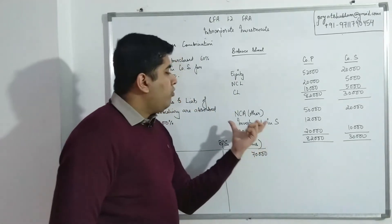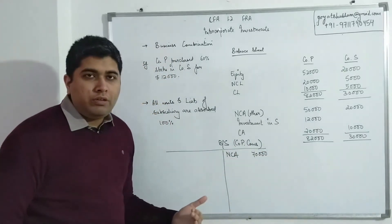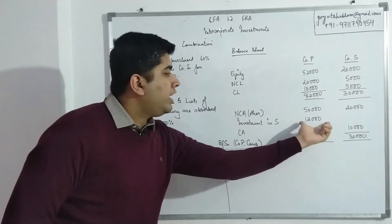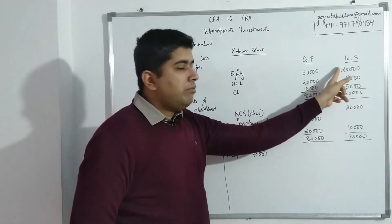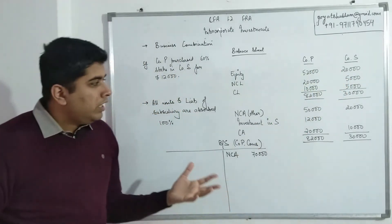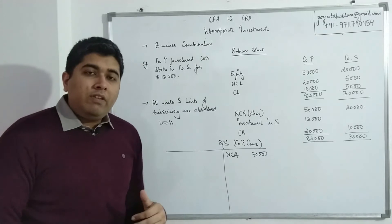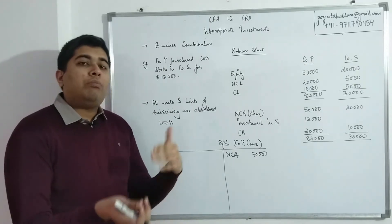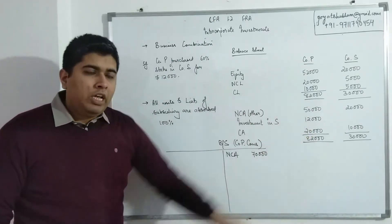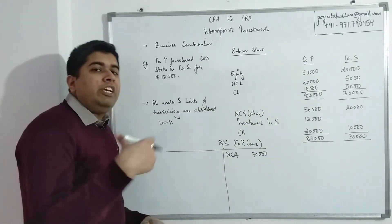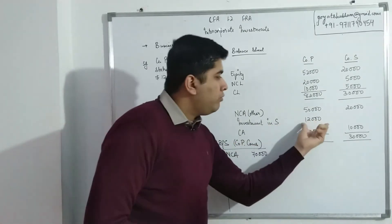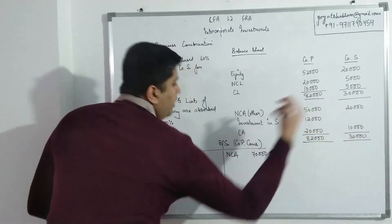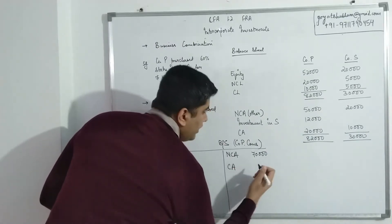The investment line item of $12,000 in Company P's financials is eliminated during consolidation. The purpose of consolidation is to expand that single investment figure to represent the actual operations of the subsidiary. Instead of one line item, you show the full details of the subsidiary's assets and liabilities. Current assets are added up to $30,000.